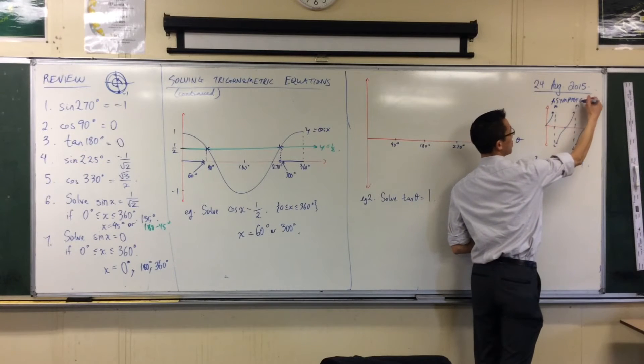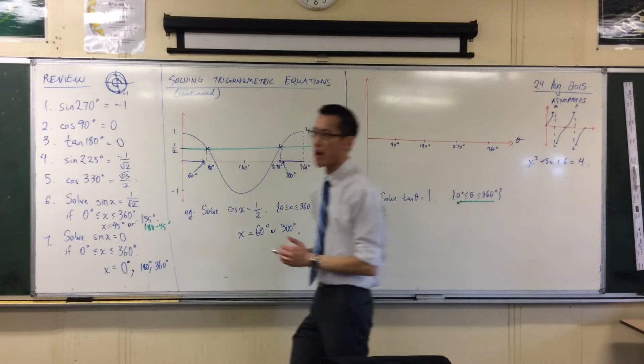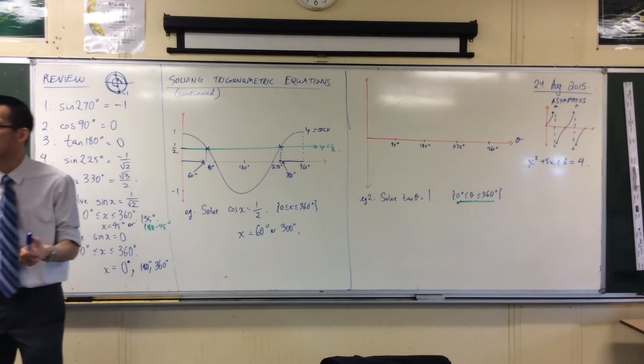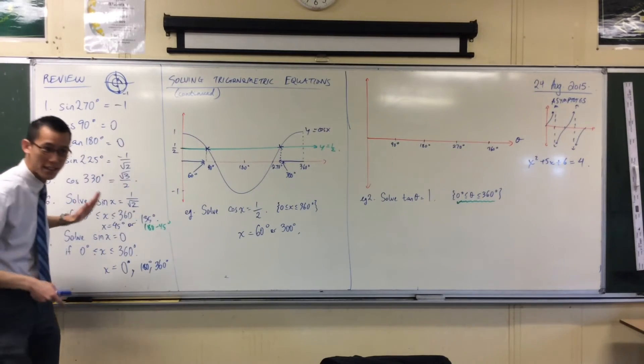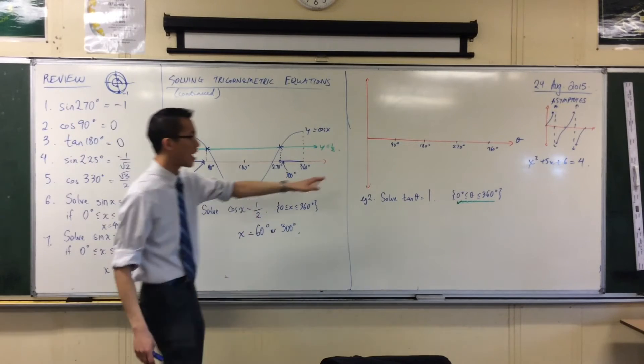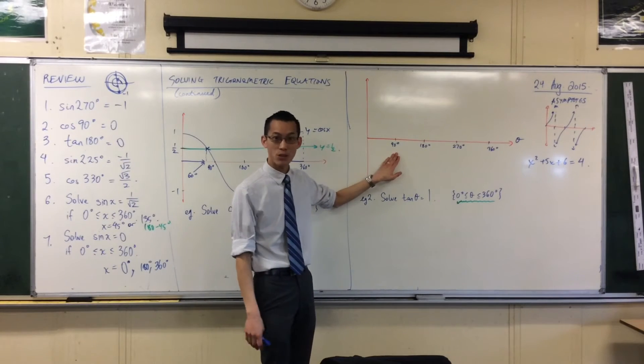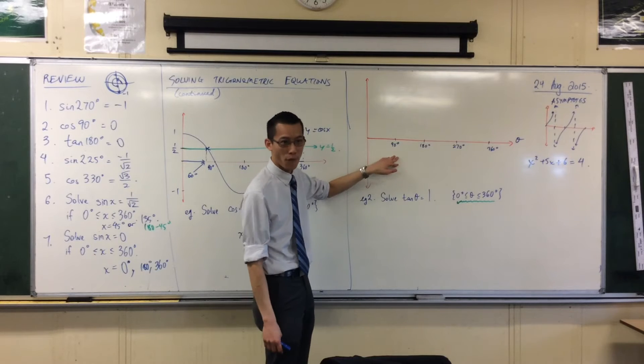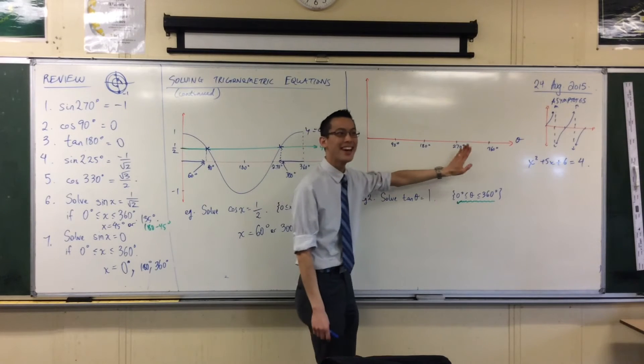They're these special places where the graph on ours anyway can't exist. You remember it tries to get closer and closer and closer, but it never gets there. You can't put tan 90 into your calculator, it'll just say forget it, I'm going home, you know, I quit. Same with 270.